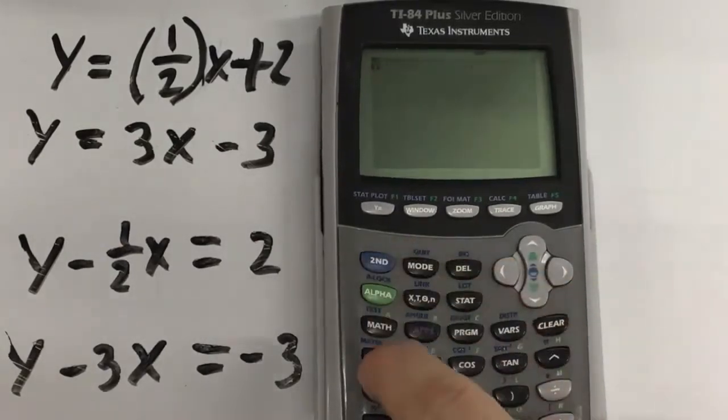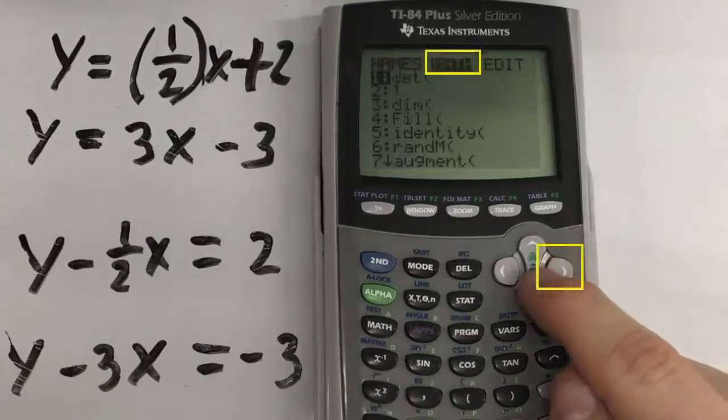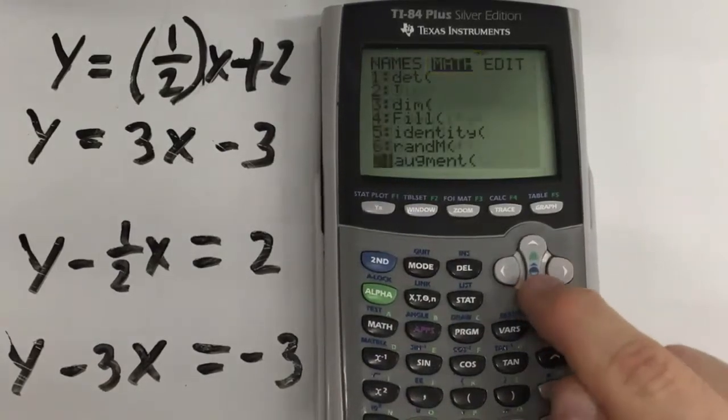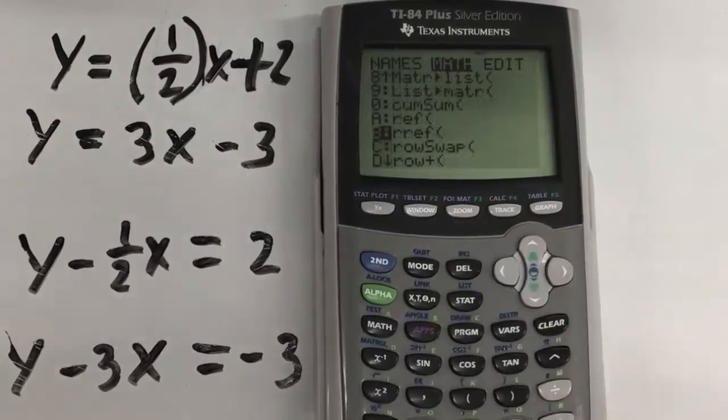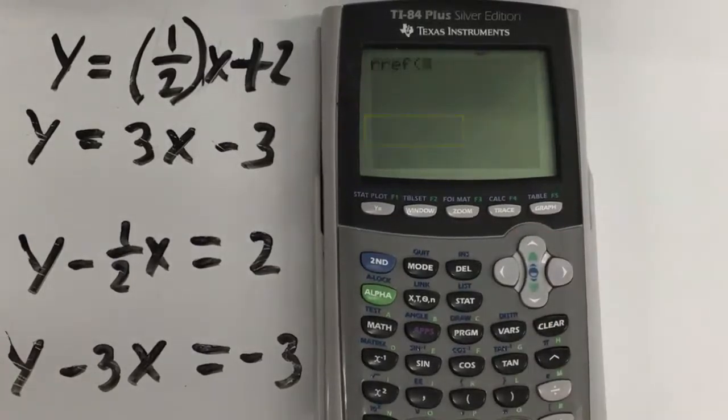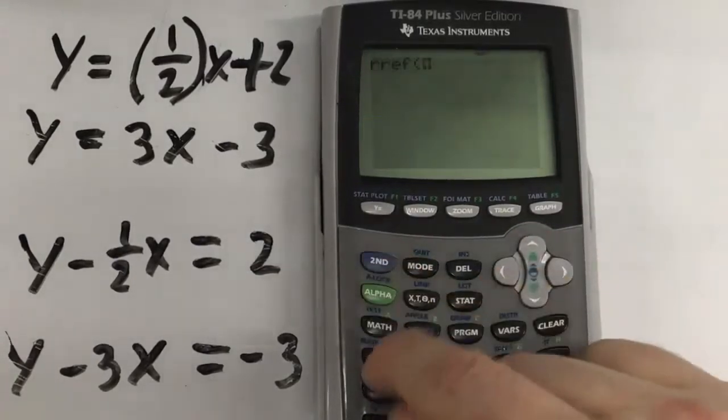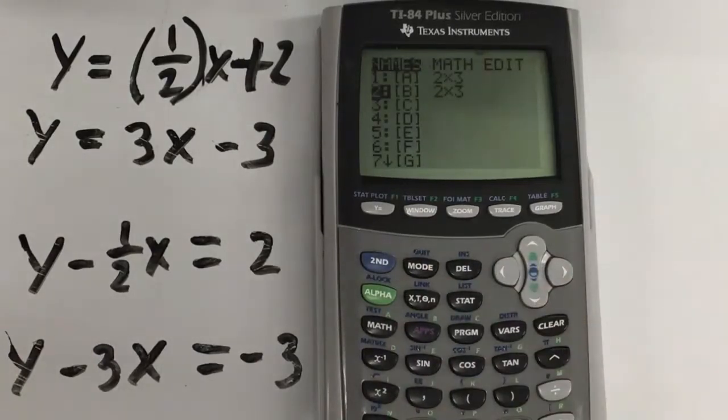Go back into matrix again. And now, we're going to go into math. Remember, I'm going to go all the way down here to find RREF. Select it. Call the right matrix I want. This time, put it in B. So, select B. And hit enter.